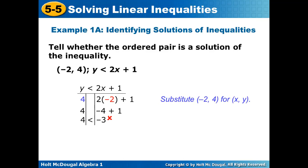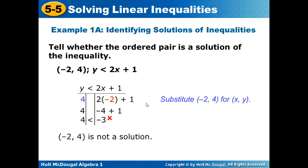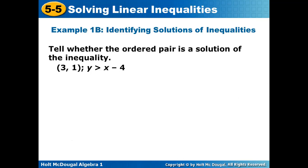Once you substitute, you have Y = 4 and in place of X we substitute negative 2, so 2 multiplied by negative 2 gives negative 4, plus 1 gives negative 3. This means the ordered pair is not a solution, because 4 is not less than negative 3. We all know 4 is not less than negative 3, so (-2, 4) is not a solution.